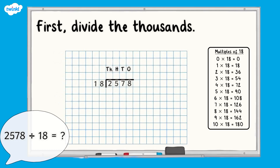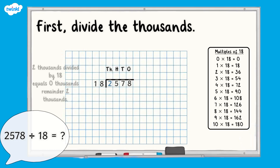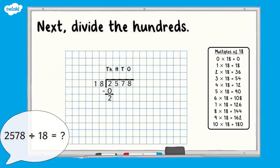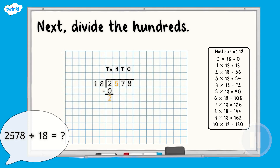First, divide the thousands. Pause here and complete this step. Two thousands divided by 18 equals zero remainder two thousands. Did you write all the digits correctly? Next, divide the hundreds. Don't forget to include the hundreds from the dividend. Pause here and complete this step. Twenty-five hundreds divided by 18 equals one hundred remainder seven hundreds.